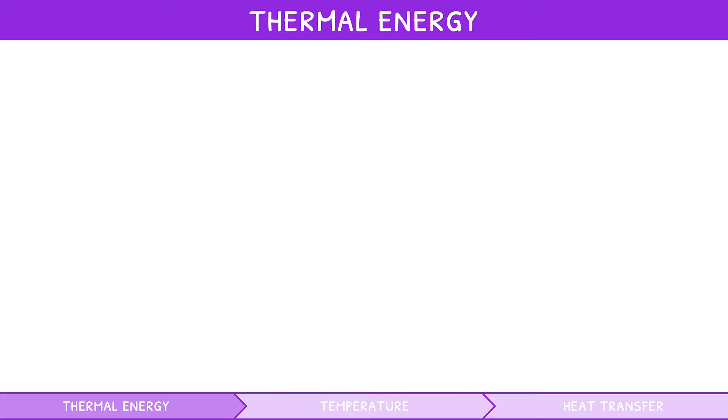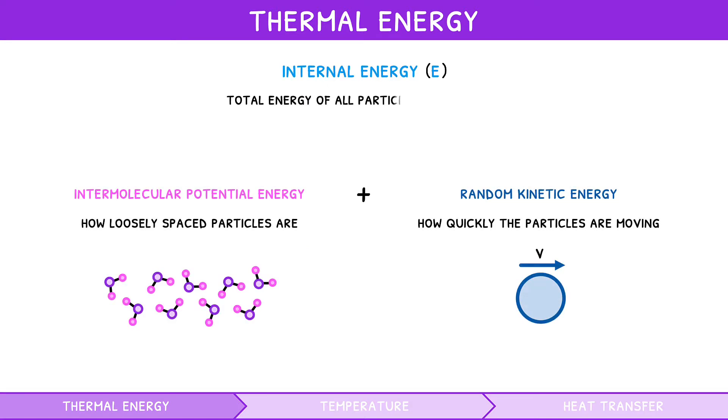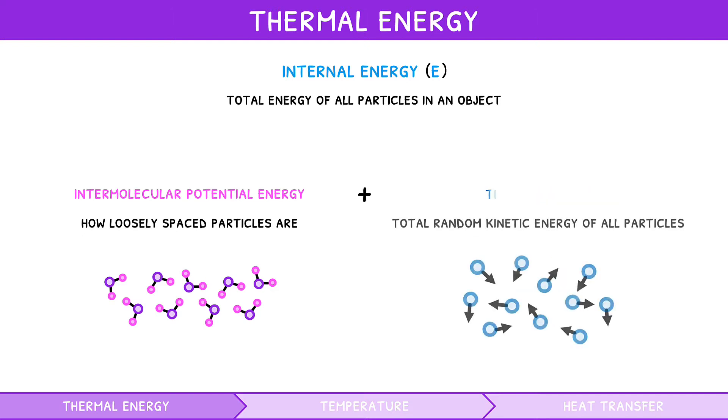In our previous Topic 3 video, we defined internal energy as total energy of all particles in an object. So, in this context, it can now be redefined as the sum of an object's intermolecular potential energy and its thermal energy.